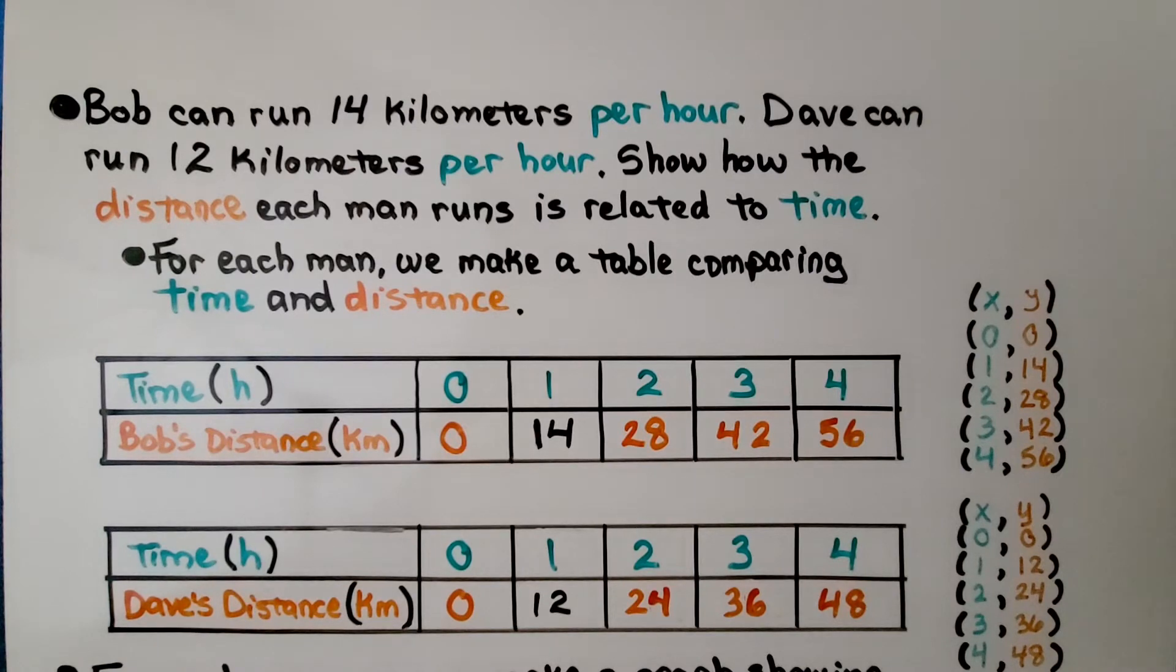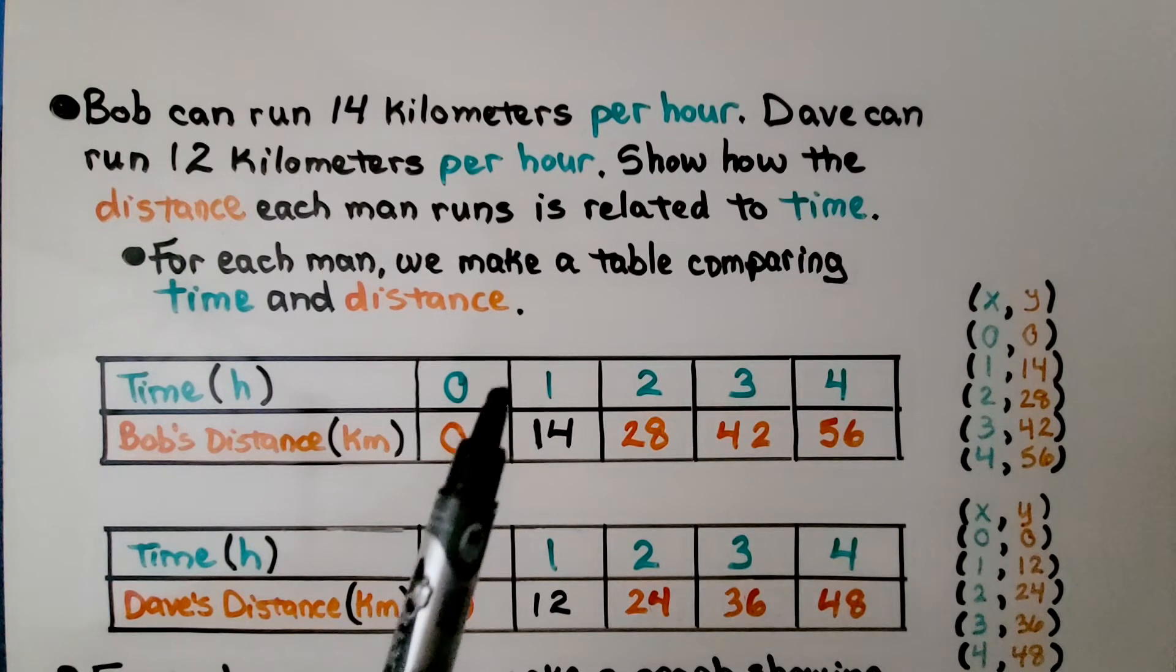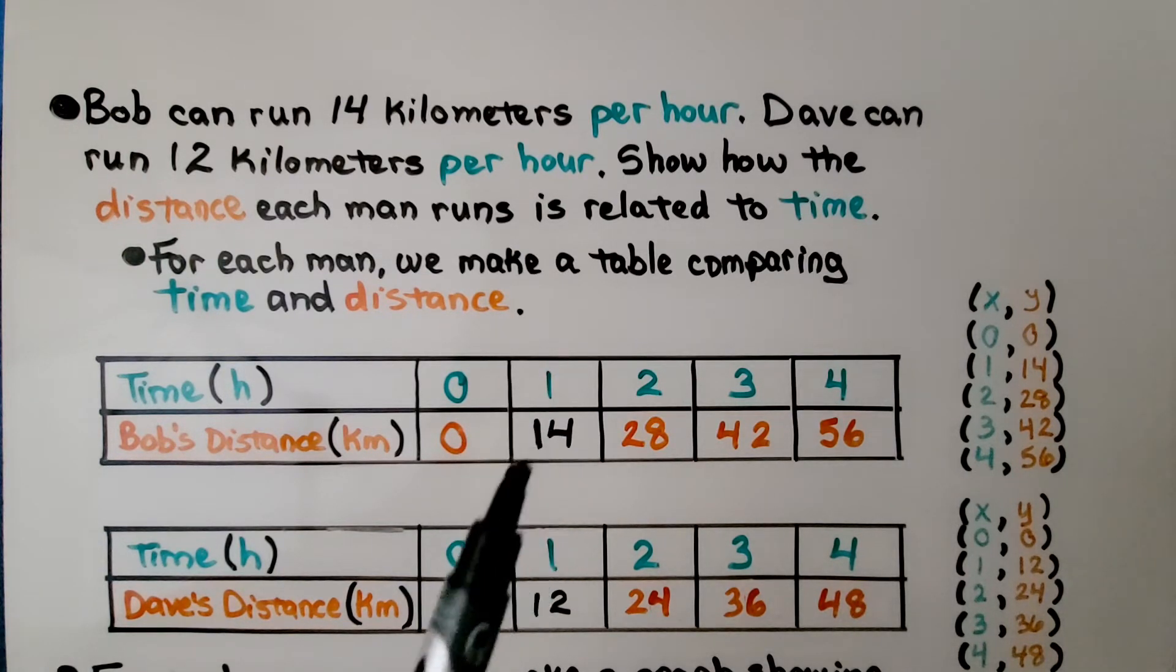We can use the data in the tables to determine which man is running faster by comparing the distances they ran at the same amount of time. In one hour, he ran 14 kilometers, and in one hour, he ran 12. Bob must have run faster.